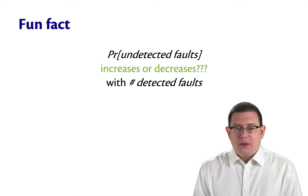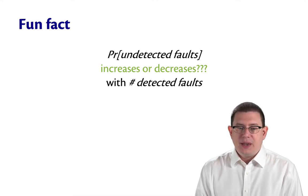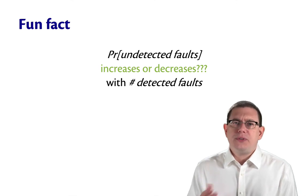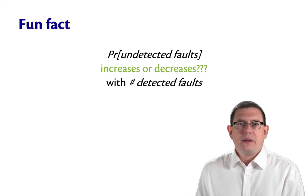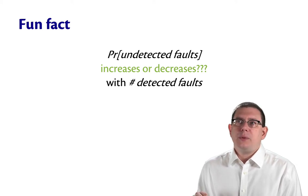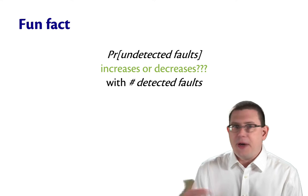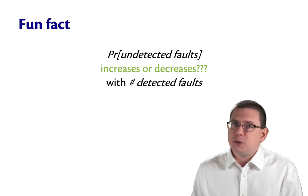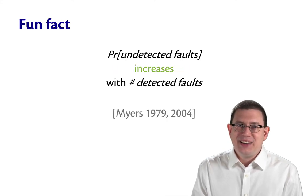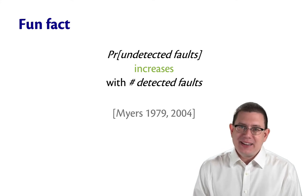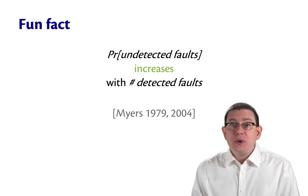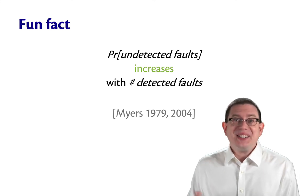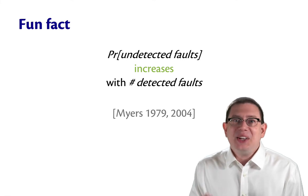Here's a fun fact. What do you think the probability of undetected faults is as a function of the number of detected faults so far? Suppose there's been a lot of faults found in a system already. Do you think that makes it more likely that there are still faults to be found, or less likely? The argument for less likely would be: there's only so many faults in the system, and if I've found a lot of them already, I'm probably most of the way done. But in fact, in studies done both in the late 70s and then repeated in the 2000s, the probability of undetected faults increases with the number of detected faults. So the more bugs that have been found in a system so far, the more buggy that system still is likely to be.